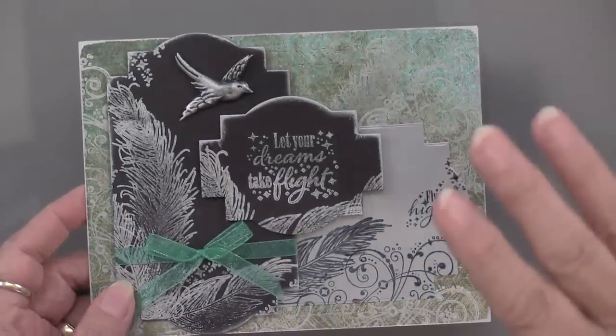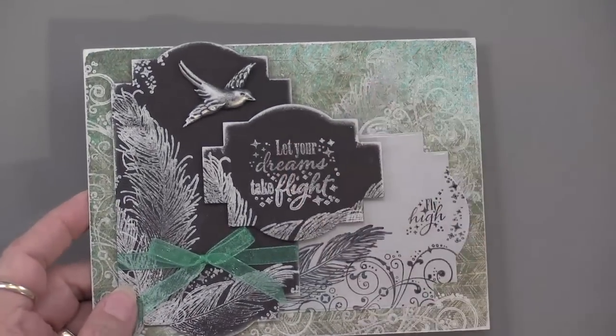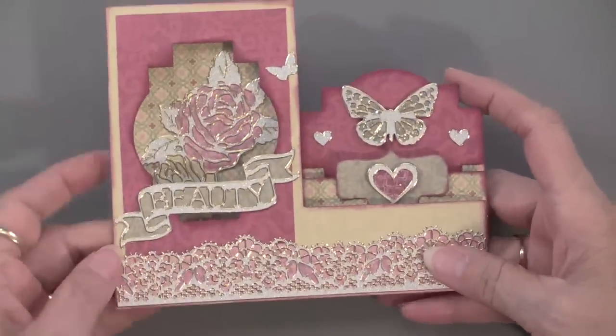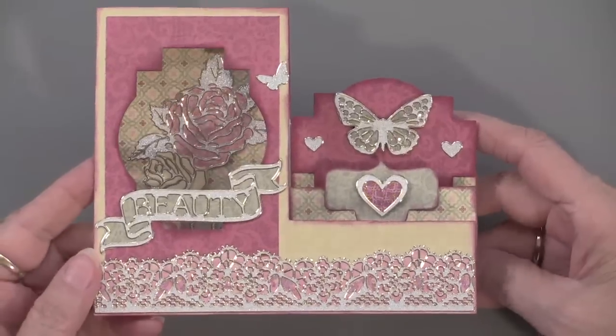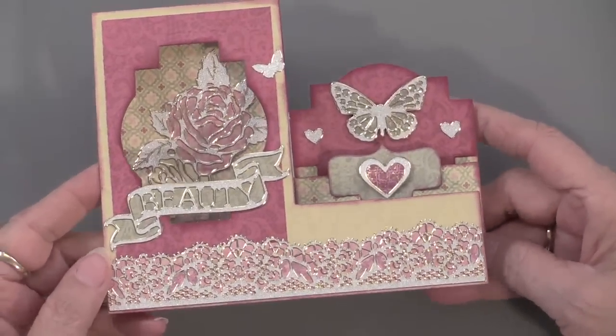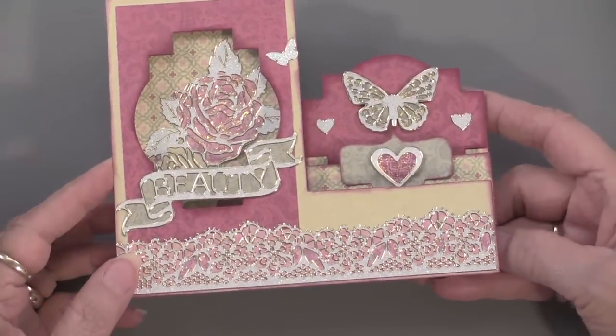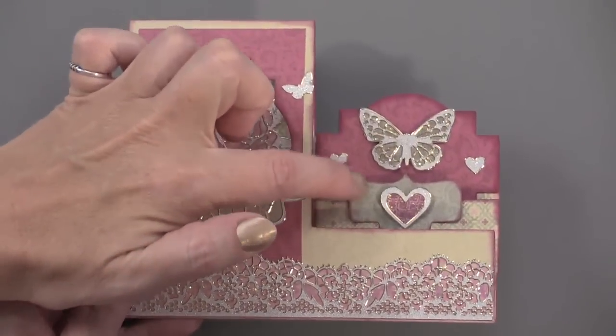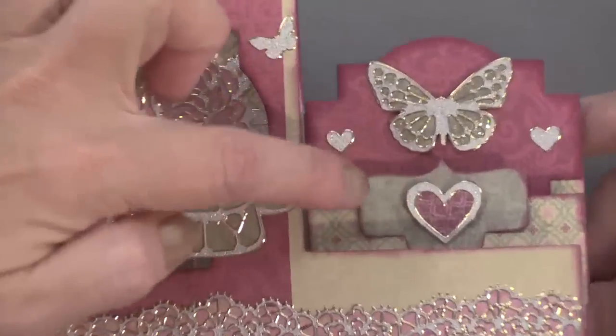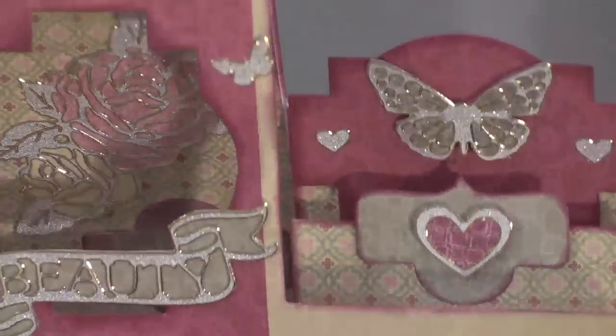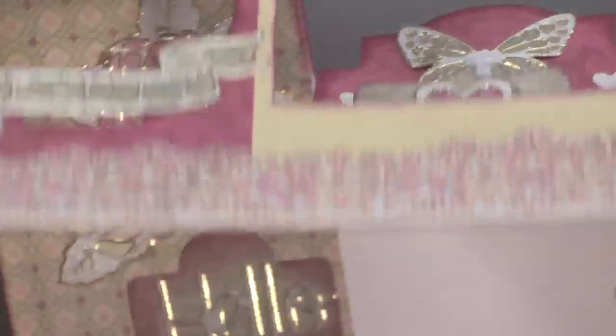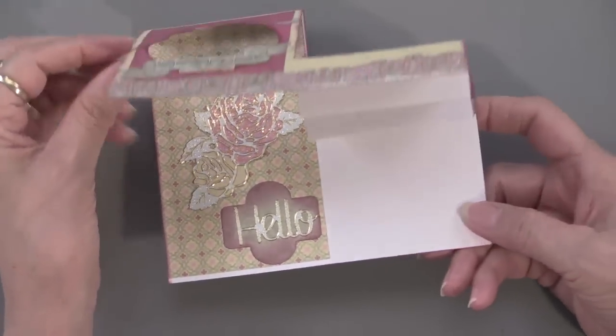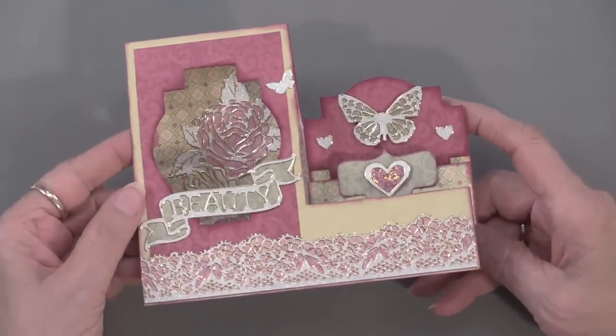From the same set we're going to show a card that Debbie made. This one has a window. So I just thought that was a great idea. You can use whatever size you want to create that window, and then you can make extra labels which she has done, mixing and matching some of the ends to get different shapes. There's another one on the inside.